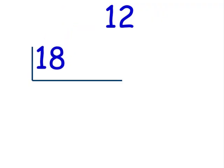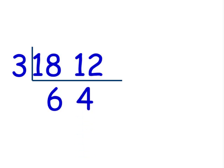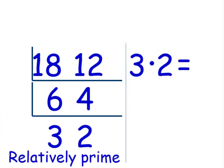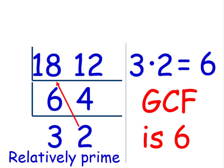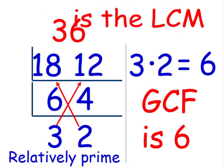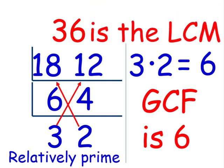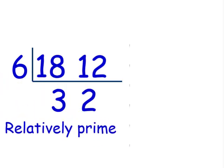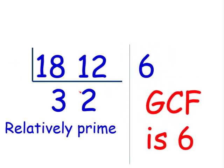You might have tried 3 first — that's also correct. 18 divided by 3 is 6, and 12 divided by 3 is 4. Then 2 can divide 6 and 4 evenly: 6 divided by 2 is 3, and 4 divided by 2 is 2. Our GCF is 3 times 2, which is 6. Our LCM is 2 times 18 or 3 times 12, which is 36. The best way is to factor out the 6 directly: 18 divided by 6 is 3, and 12 divided by 6 is 2. Our GCF is 6, and our LCM is 2 times 18 or 3 times 12, which both equal 36.